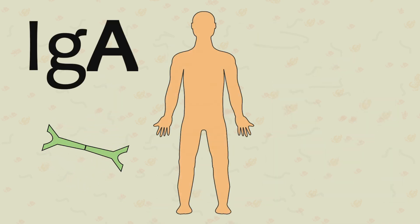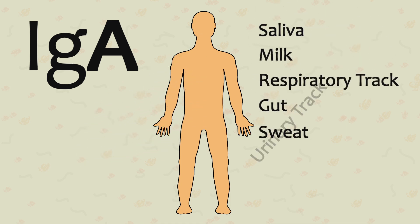There are two types of IgA's. These are not typically found in the blood, but in secretions of the gut, saliva, sweat, milk, respiratory tract, and urinary tract.